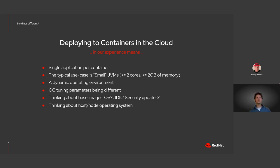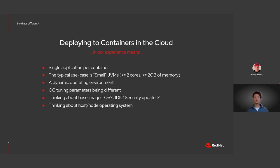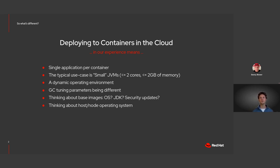When it comes to GC tuning, you might want to optimize for a different metric. In the public cloud, you have to pay attention to the cost associated with it — when you're paying for memory use and CPU use, you probably want to tune your garbage collector to save as much memory as you can. You also need to think about the base image: which operating system are you running, and does it include the operating system dependencies inside the container?